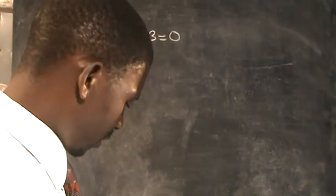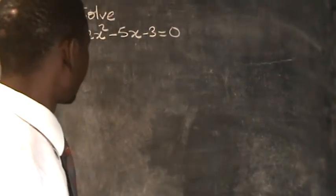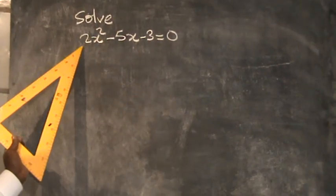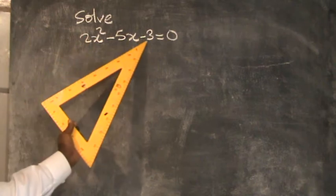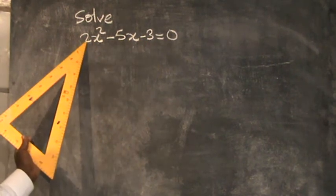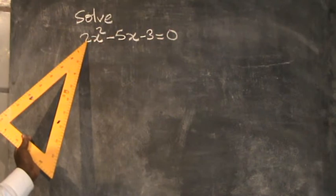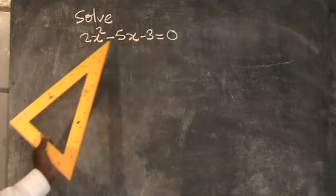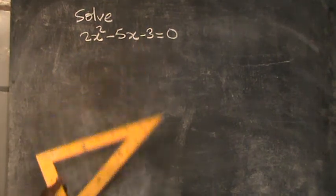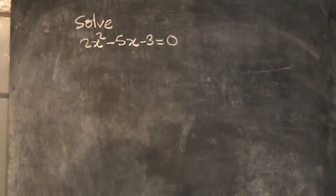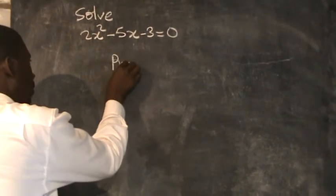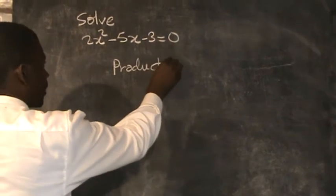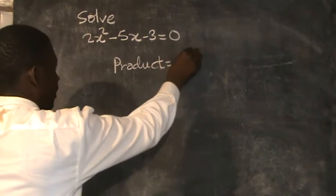Looking at this problem, first I have to raise the product. The product can be raised by multiplying the first number. This time there is a 2 before x squared, so the coefficient of x squared, which is 2, is multiplied by the last number, negative 3. So the product is 2 multiplied by negative 3, which equals negative 6.